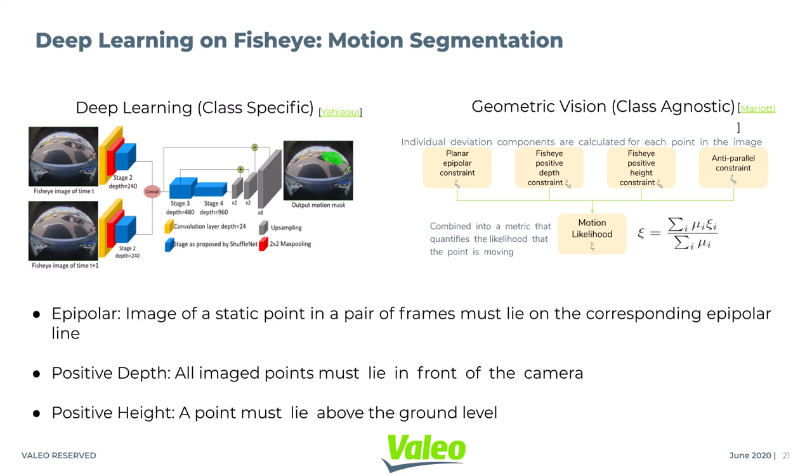In the case of the CNN-based model, we trained the network in a supervised fashion on 7K images. In the case of the classical approach, we converted the optical flow to spherical coordinates and applied moving object geometric constraints like planar epipolar constraint, positive depth, and positive height constraints to filter moving object pixels. At present, we are working on incorporating these constraints into loss functions for CNNs.